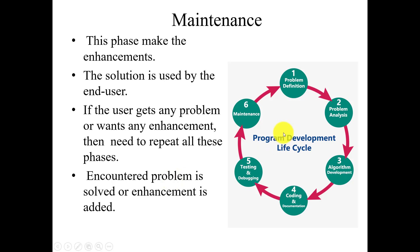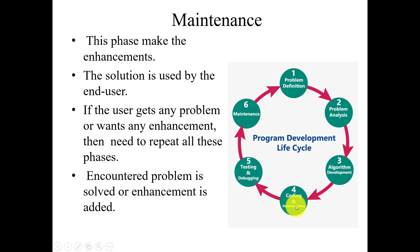So the program development life cycle includes six phases: problem definition, where we define the problem and its boundaries; problem analysis, where we define requirements and resources; algorithm development, where we write the step-by-step procedure; coding and documentation, where we implement the actual program; testing and debugging, where we check for errors and verify correct output; and maintenance, used by the end user. If any problem is encountered, enhancements are made and the cycle goes on. In the next video we are going to discuss the features of C.